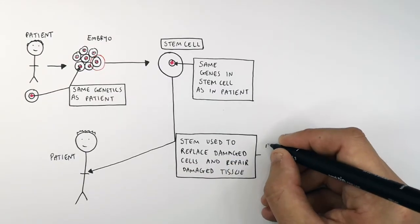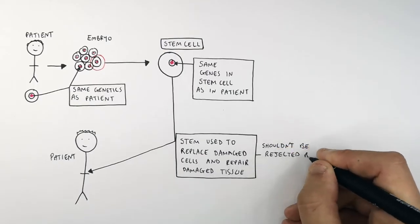The new cells that it differentiates into forming a new tissue shouldn't be rejected by the immune system.